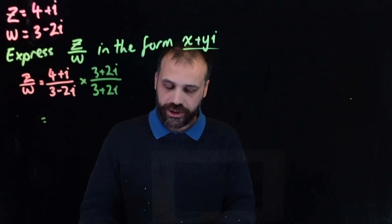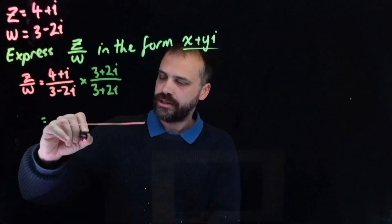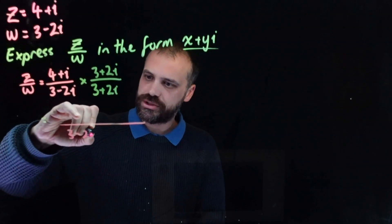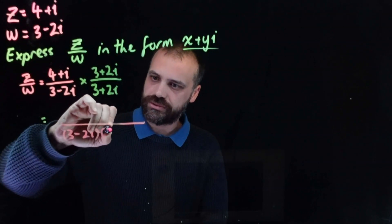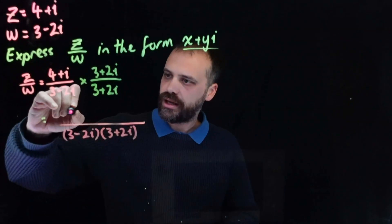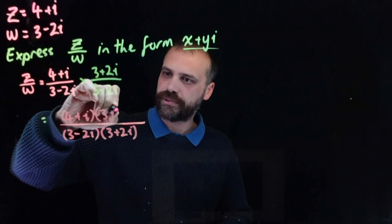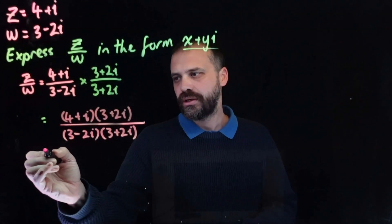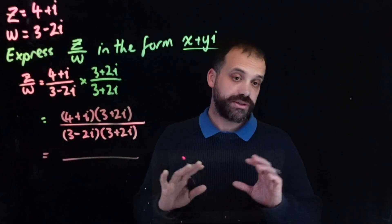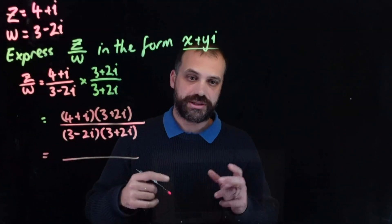Now, I really like to write the whole thing out because I don't want to make a mistake. So 3 minus 2i times 3 plus 2i on the bottom, and 4 plus i times 3 plus 2i on the top. Now, I always do the denominator first because the denominator is the easiest bit. So 3 times 3 is 9.